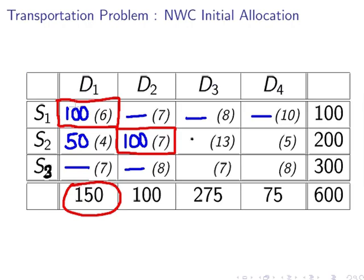Let's move on here now. 50 for D3, this is the next cell we're going to look at—50 for D3 from S2, and he's not going to supply anymore, so he's out.